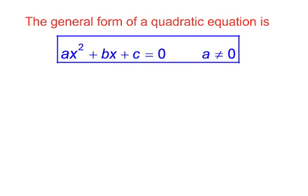The general form of a quadratic equation is ax² plus bx plus c equals 0, where a is not equal to 0.